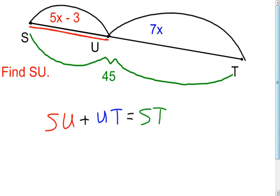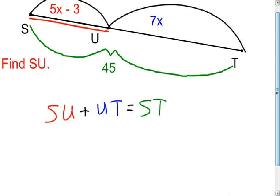Now I start with that because now it's just a matter of filling in everything I know. Well, the length of segment SU, that was 5X minus 3. I'm going to have to add on the length of segment UT, which it tells me is 7X. And then that's going to all equal the length of segment ST, which it tells me is 45 units.